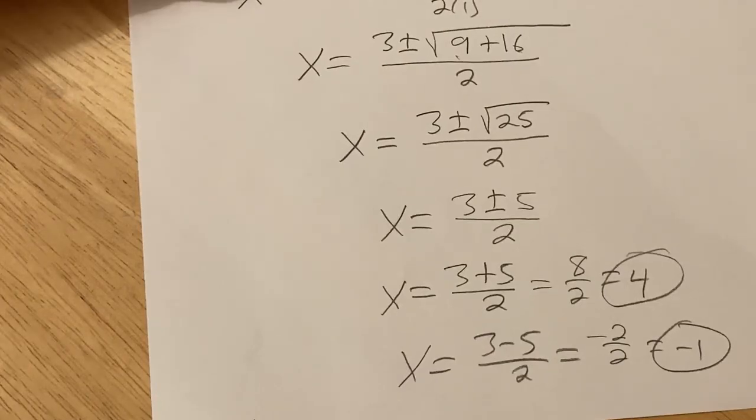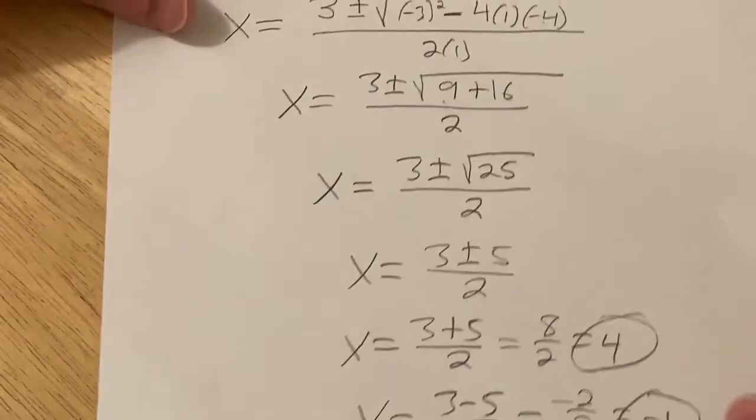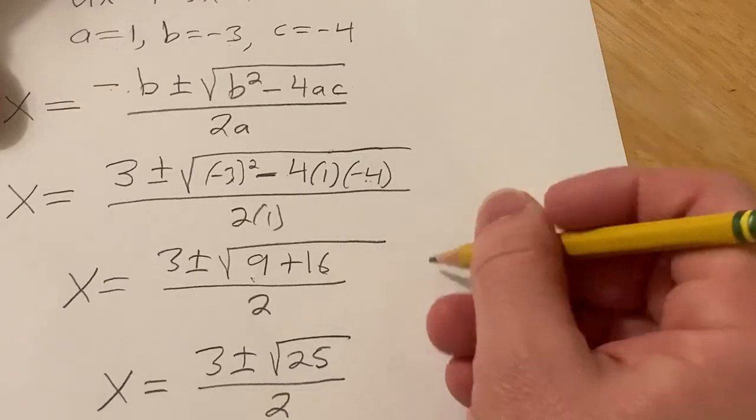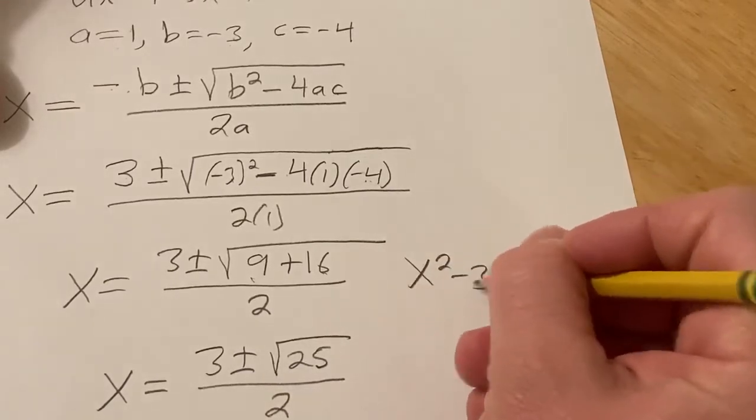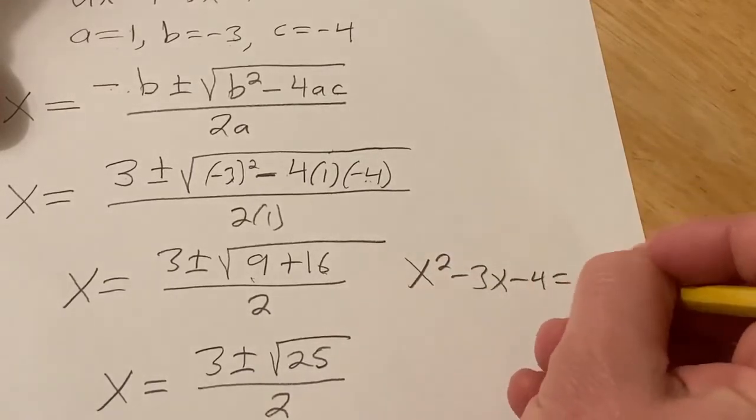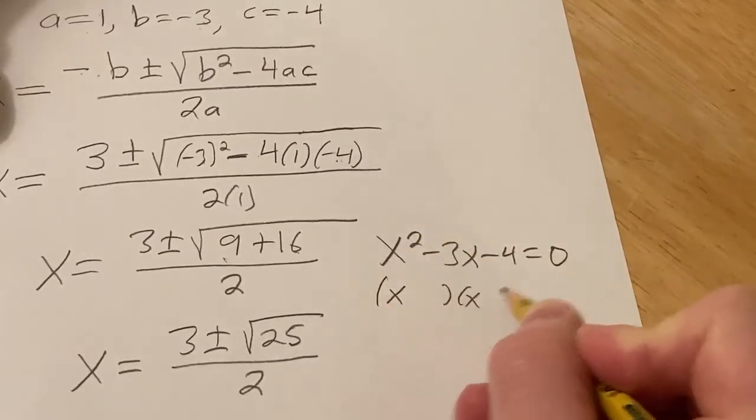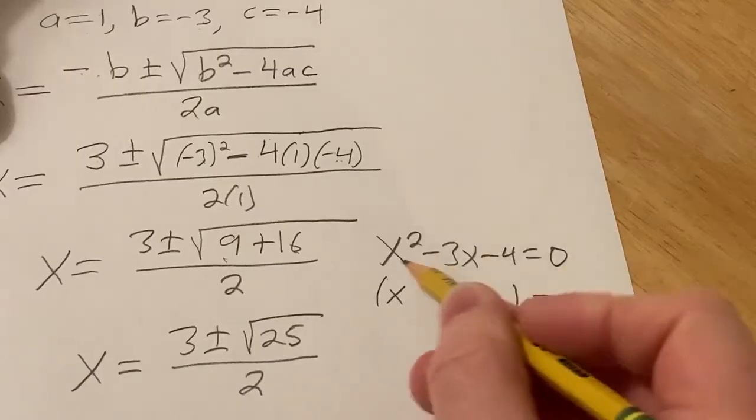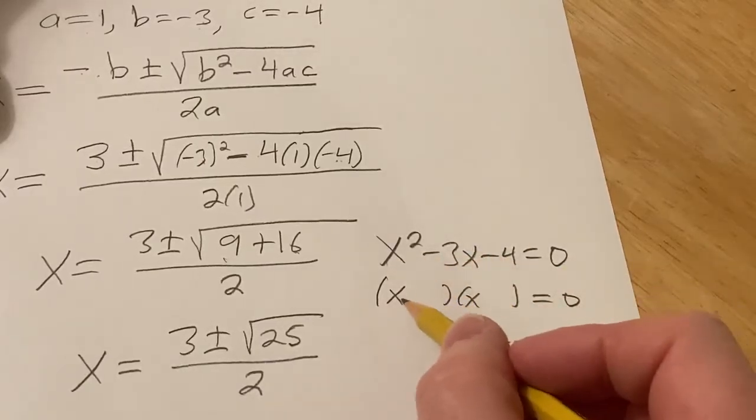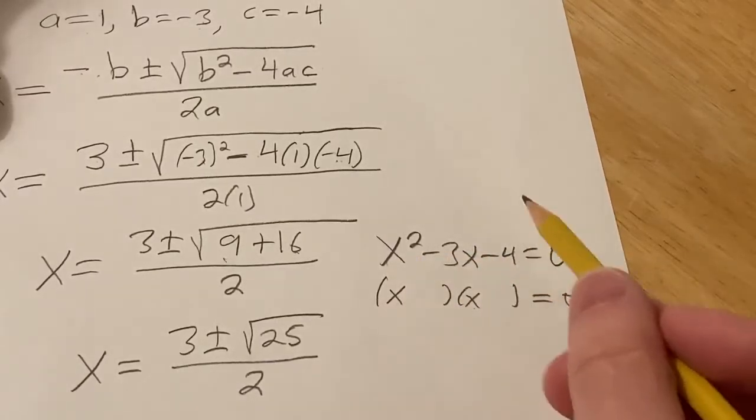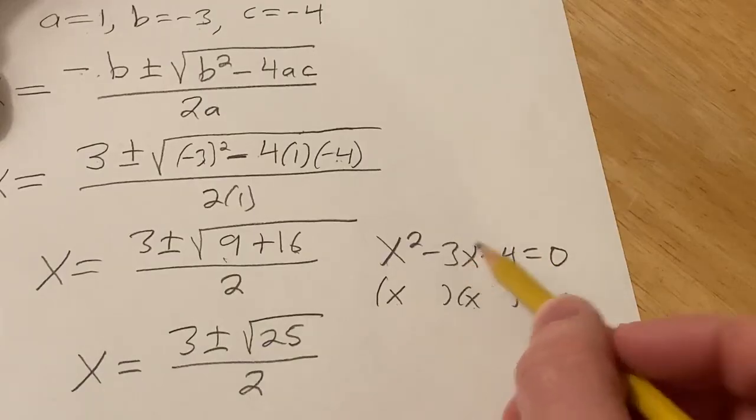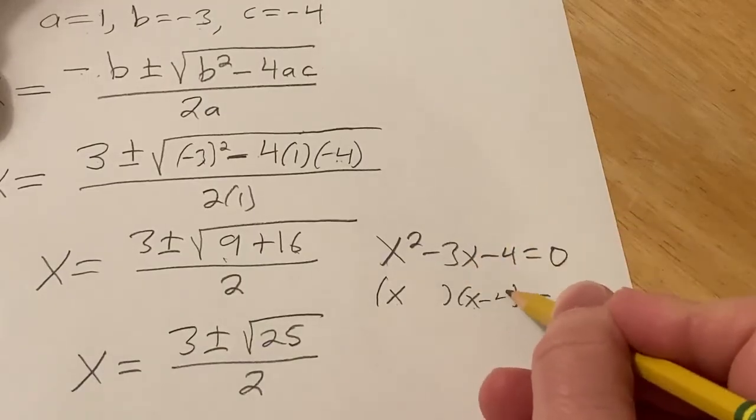This problem could have been done another way, which was much easier. Let me just show you really quick. So if you have x squared minus 3x minus 4 equals 0, you can actually do this by factoring. So basically, you assume that the product is going to look like this, x times x is x squared. Then you need two numbers that multiply to negative 4 and add to negative 3. So negative 4 and plus 1.